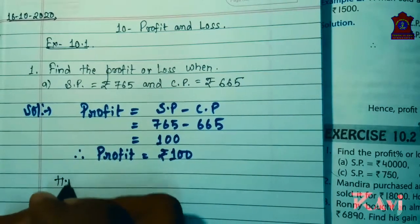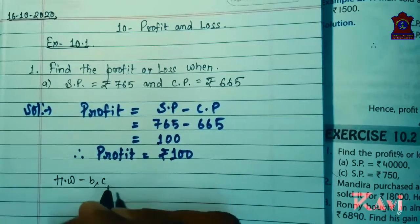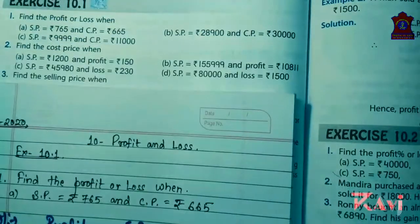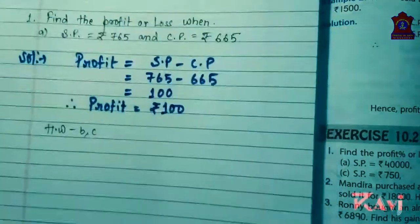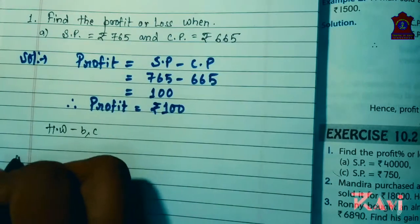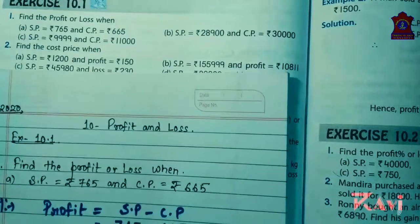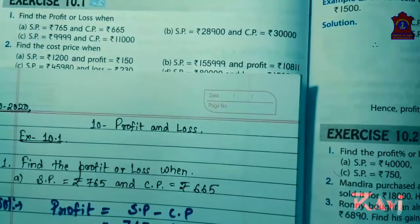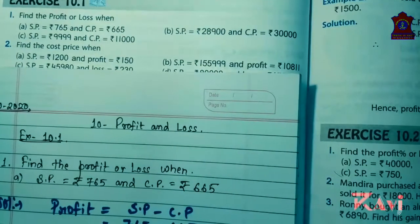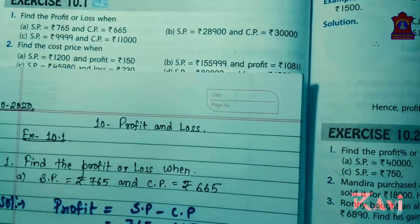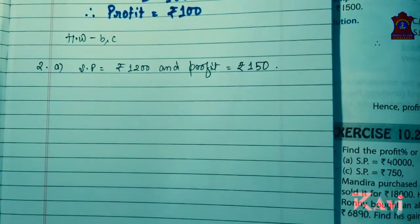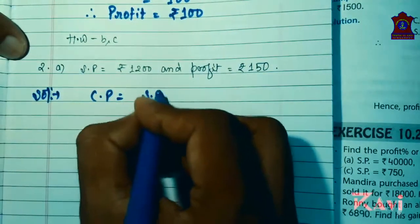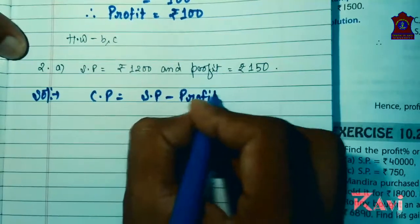Try question number B and C by yourself. Now question number two: find the cost price when SP is given and profit is given. Cost price when SP is rupees 1200 and profit equals rupees 150. When SP and profit is given, what is the formula for finding CP?